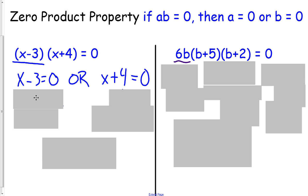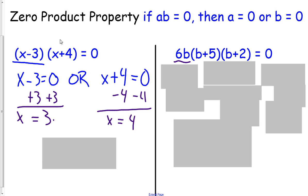To solve, we're adding three to each side. Plus three, plus three, and we're going to get x equals three. We're also going to subtract four from each side on this part. And we're going to get x equals negative four. So our two answers are going to be three and negative four.